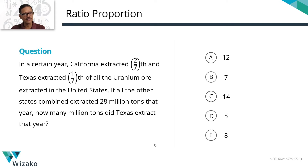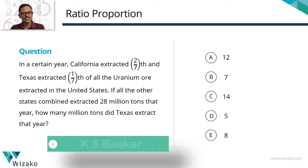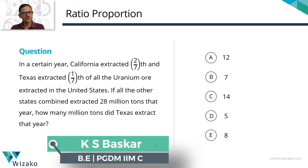This is an easy GRE practice question — a quant problem-solving question from ratio and proportion. It's a very easy word problem. Understand the gist of what is said, note down the data properly, and then you should be able to zoom through the question — probably about 45 seconds to crack this.